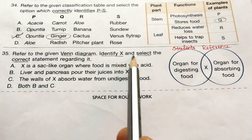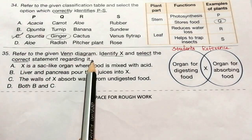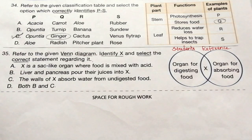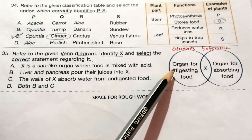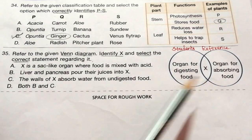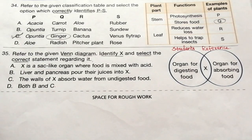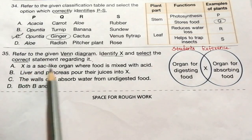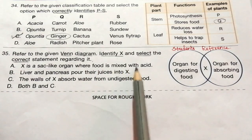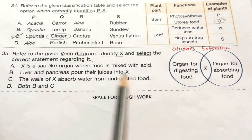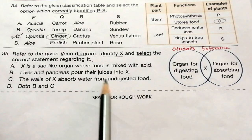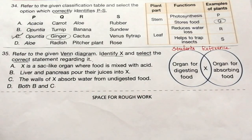Question 35: Refer to the given Venn diagram. Identify X and select the correct statement regarding it. X is the organ for digesting food and absorbing food. Reading the options: A — X is a sac-like organ where food is mixed with acid; B — liver and pancreas pour their juices into X; C — the walls of X absorb water from undigested food. The correct answer is B.